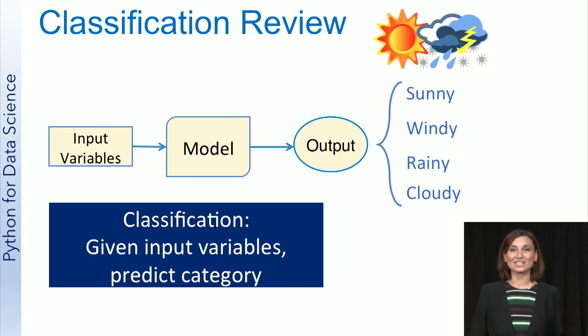The classification example shown here is one we have seen before. The input variables are measurements such as temperature, relative humidity, atmospheric pressure, wind speed, and wind direction. The task for the model is to predict the weather category associated with the input data. The possible values for the weather category are sunny, windy, rainy, or cloudy. Since we are predicting the category, this is a classification task.